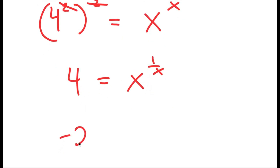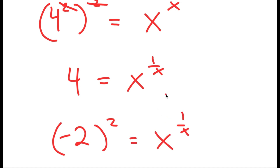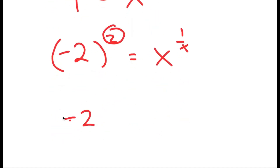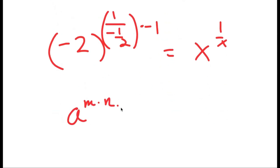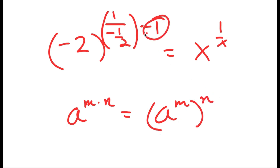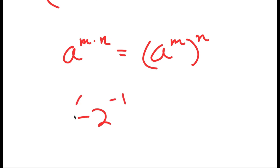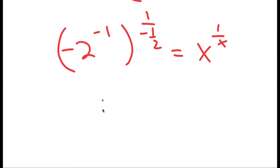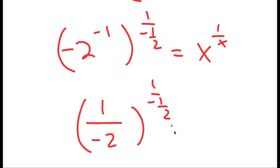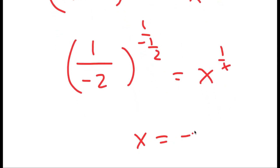Now, 4 is the same thing as negative 2 squared. And 2, our exponent here, I can rewrite as 1 over negative 1 half, and I have this times negative 1. So I have 1 over negative 1 half times negative 1. Remember, if I have something in the form a to the power of m times n, this is equal to a to the power of m to the power of n. So this negative 1 I'm going to move to be an exponent of negative 2. So I get negative 2 to the power of negative 1 to the power of 1 over negative 1 half is equal to x to the power of 1 over x. And negative 2 to the power of negative 1 is 1 over negative 2, so my solution here is negative 1 half.